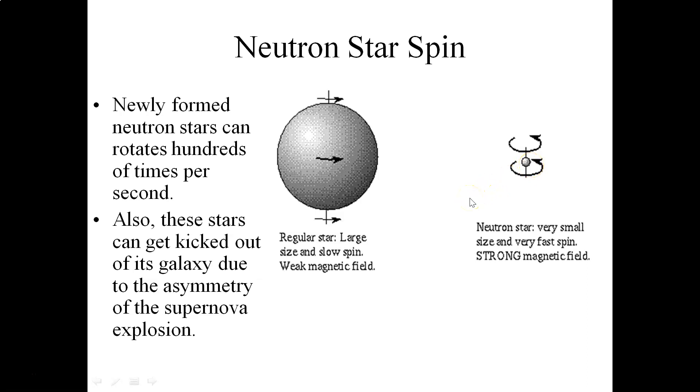In the case of neutron stars, when they are first formed, they can actually spin at frequencies of several hundred times per second. Sometimes the explosion, the supernova explosion itself, is asymmetrical, and then therefore the individual star actually reaches an escape velocity from the entire galaxy, and it can be kicked out of the entire galaxy due to the supernova explosion.